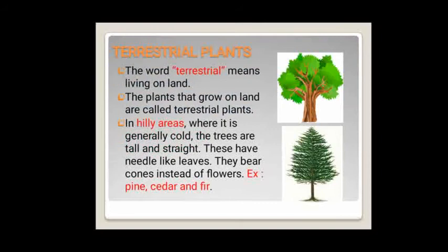Let us discuss about terrestrial plants. The word terrestrial means living on land. The plants that grow on land are called terrestrial plants. In hilly areas where it is generally cold, the trees are tall and straight. These have needle-like leaves and bear cones instead of flowers. Examples are pine, cedar and fir.